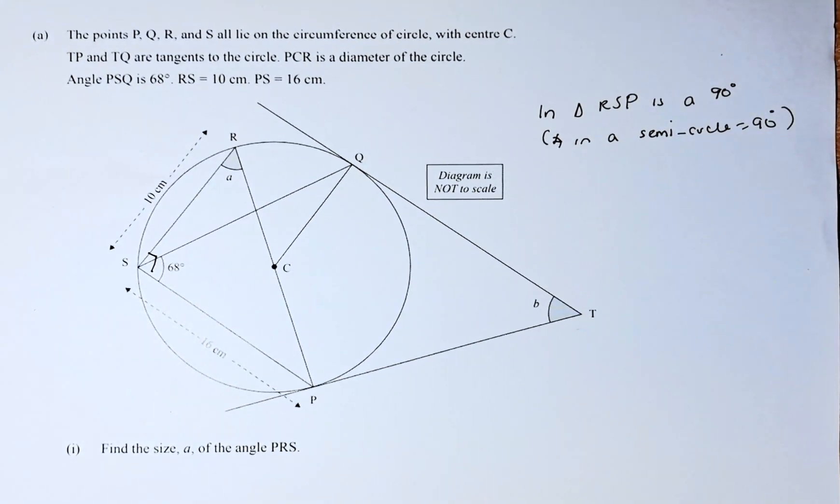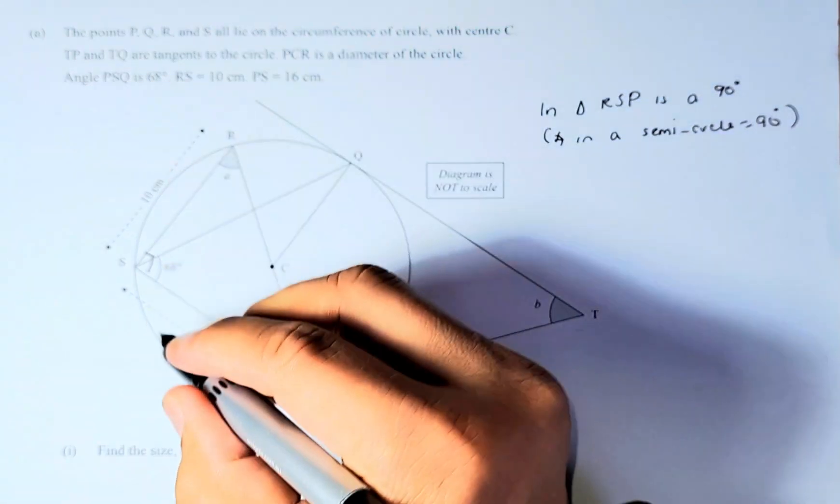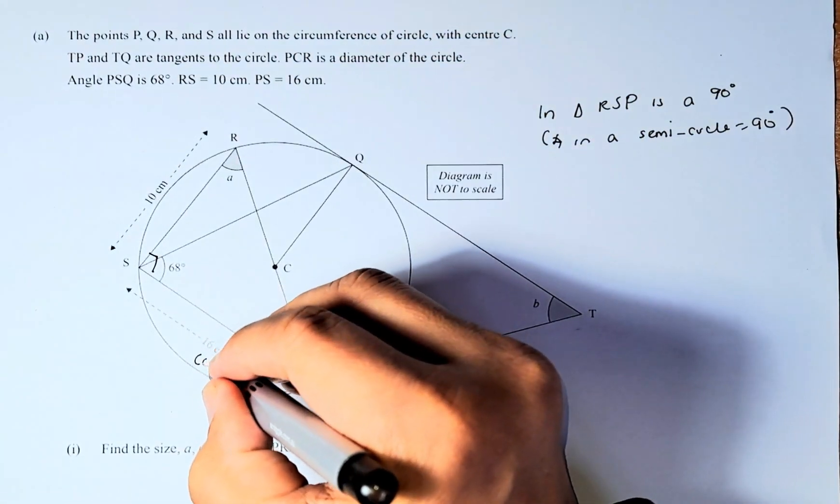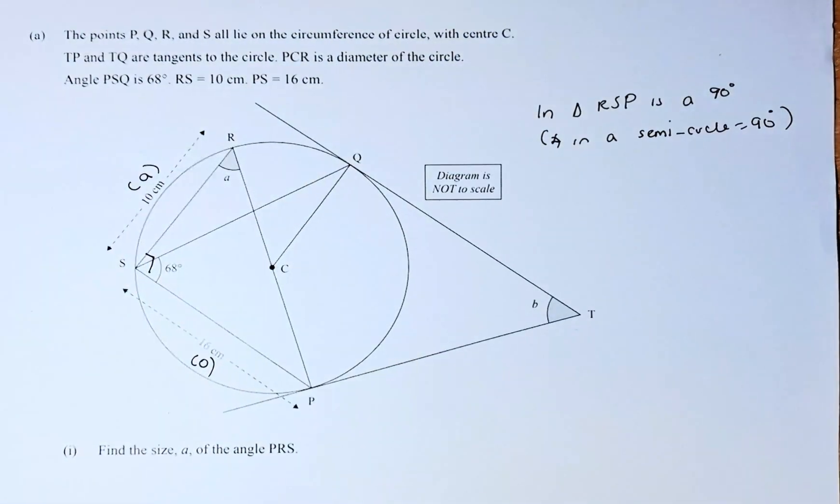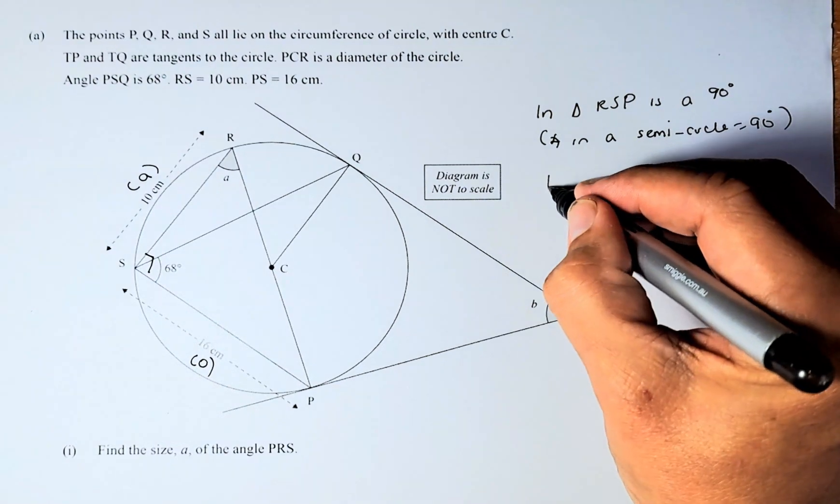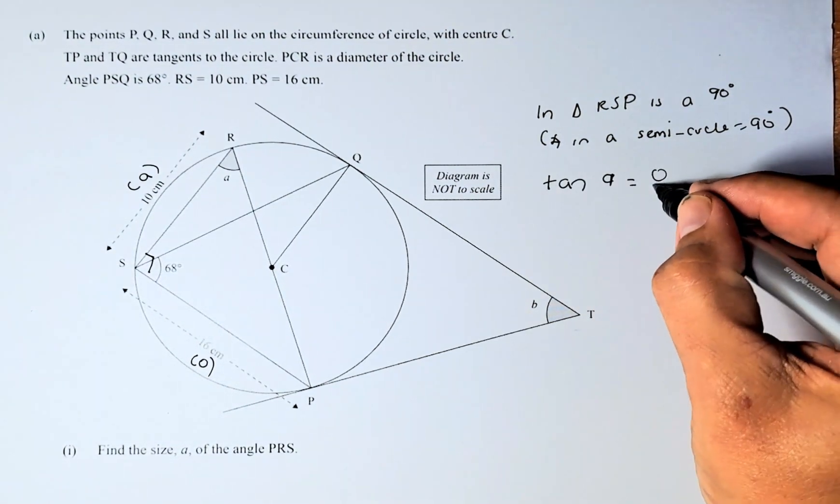So you know that's 90 degrees. Once you know that, we can calculate A using the straight ratio. So A here, 16 is going to be the opposite, and 10 is going to be the adjacent. Once you know that, we can calculate tangent A equals opposite over adjacent.